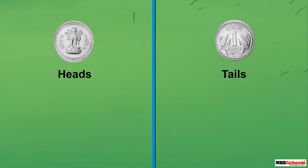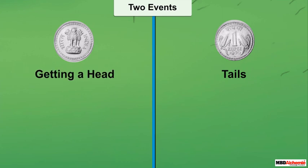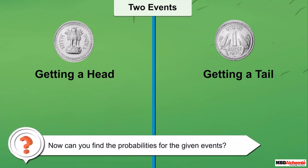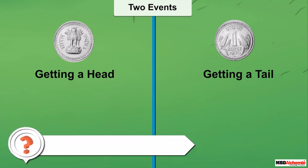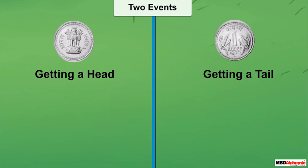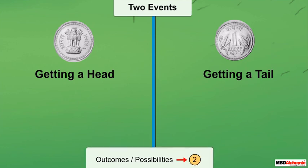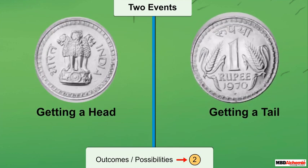The outcome of an experiment is called an event. According to the outcomes shown here, we can define two events: first is getting a head and second is getting a tail. Now can you find the probabilities for the given events? As we have already shown, there are only two outcomes or possibilities, and these are none other than head or tail.